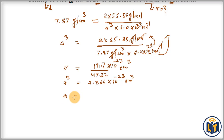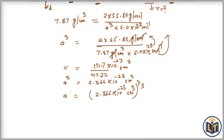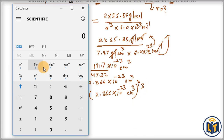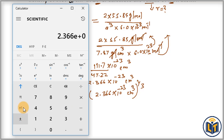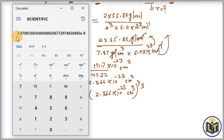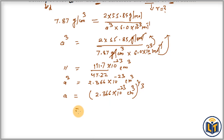From this we can find the length of the unit cell. The length a is equal to (2.366 times 10 to the power minus 23) to the power of one-third. Plugging this into the calculator gives us 2.87 times 10 to the power minus 8 centimeters. This is the length of the unit cell.